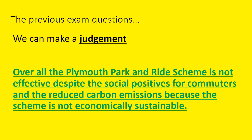Finally, to make it abundantly clear: always make a judgment. Here is a model conclusion for the Plymouth park and ride question: 'Overall, the Plymouth park and ride scheme is not effective — despite the social positives for commuters and reduced carbon emissions — because the scheme is not economically sustainable.' This combines making a judgment with picking one argument as the most important: the fact that it loses £427 per day outweighs the other benefits. That's the concept. Come and see us in H8 if you're not sure.